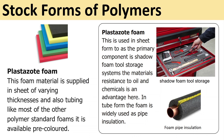Plastisote foam is supplied in sheets of varying thicknesses and also as tubing. Like most other polymer foams it is available pre-coloured. In sheet form it is used as a primary component of light shadow foam tool storage — cut from different layers of foam. The material is resistant to oil and chemicals, and is also widely used for foam pipe insulation.